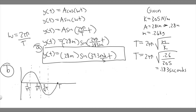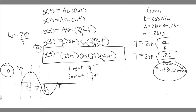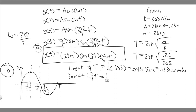At its longest it's going to be at one fourth T, and at its shortest at three fourths T. We know T is 0.183, so we can calculate these times. For the longest: one fourth times 0.183 equals 0.04575 seconds. For the shortest: three fourths times 0.183, which is 0.75 times 0.183, equals 0.13725 seconds.